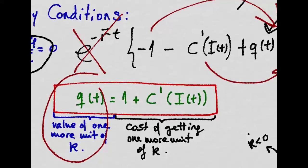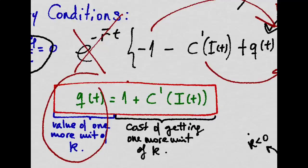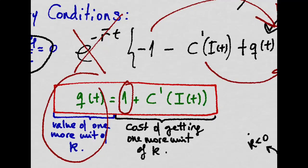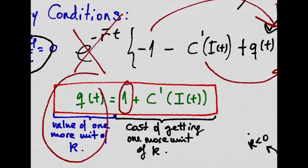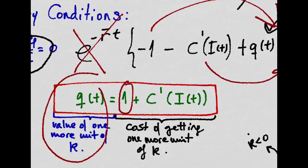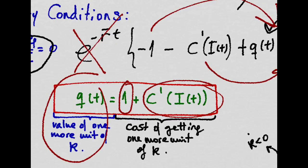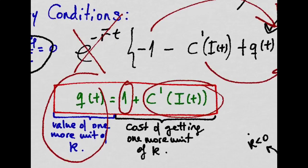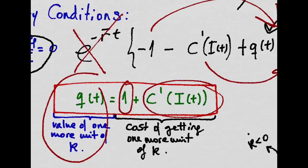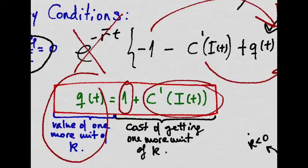That is, it has to be equal to the purchasing price of that capital, which we have assumed to be one, and it has to be equal to the increase in costs that will take place when we invest in one unit of capital.